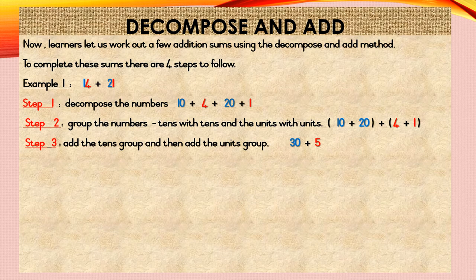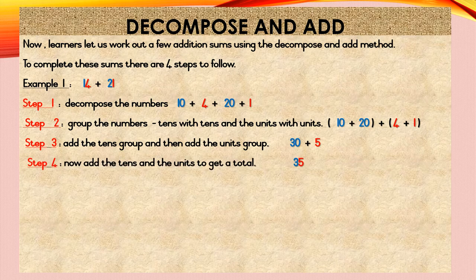Step 3: Add the tens group and then add the units group. In your tens group you have 10 plus 20, so 10 plus 20 is equal to 30. In your unit group you have 4 plus 1, so 4 plus 1 is equal to 5. So step 3 will read 30 plus 5. Step 4: Now add the tens and the units to get a total. Your tens is 30 and your units is 5, so 30 plus 5 is equal to 35. Your answer in step 4 is 35.